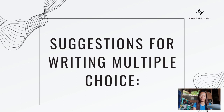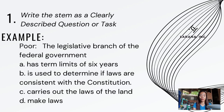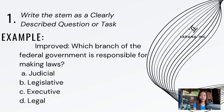Next are suggestions for writing multiple choice items. First, write the STEM as a clearly described question or task. For example, a poor question is: 'The legislative branch of the federal government.' This is poor because it doesn't clearly state what is being asked. The improved version should be: 'Which branch of the federal government is responsible for making laws?' — making it clear what the student is expected to answer.